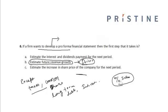Estimating the future revenue growth is the first step in developing a pro forma financial statement analysis. Once the financial statement has been made for the future, we may find that the value of assets does not match the value of liabilities plus owner's equity.